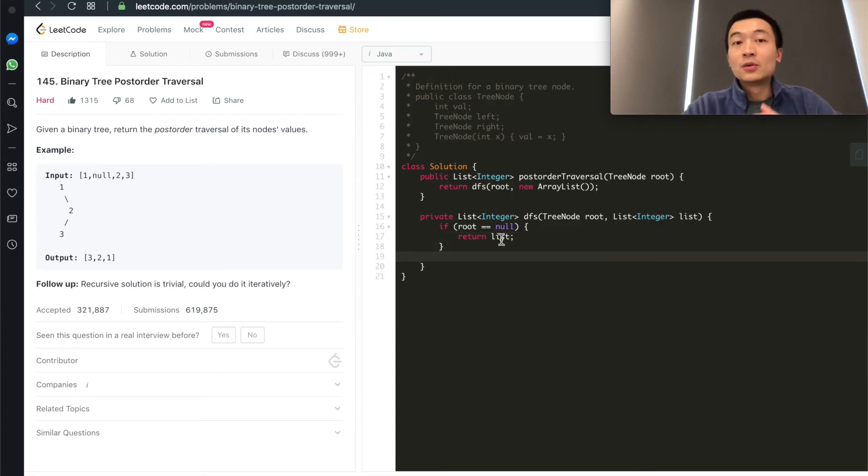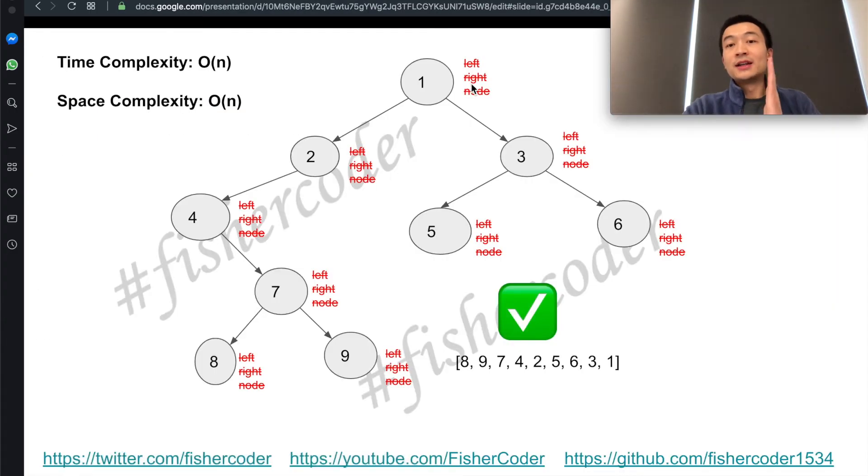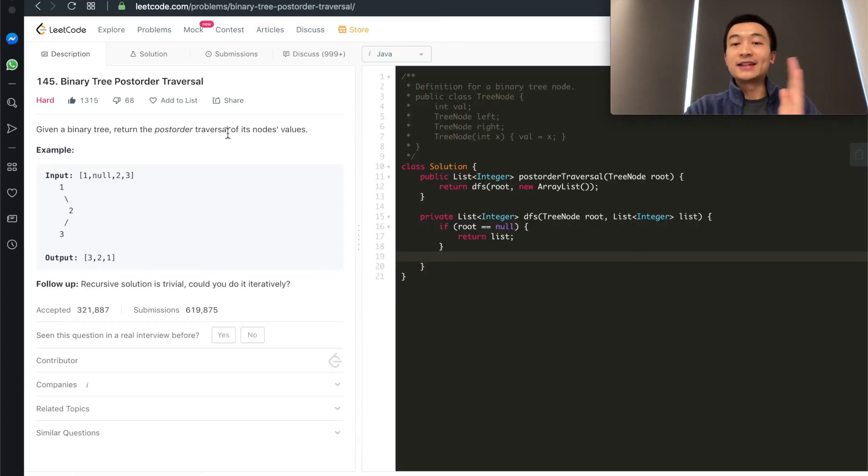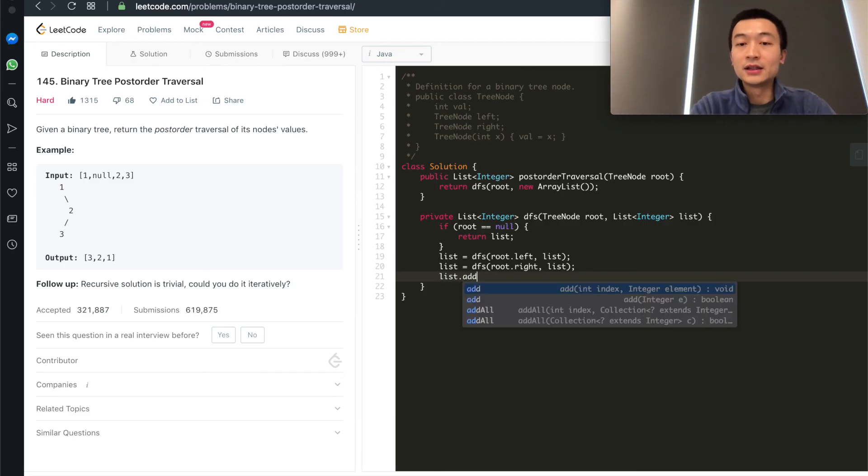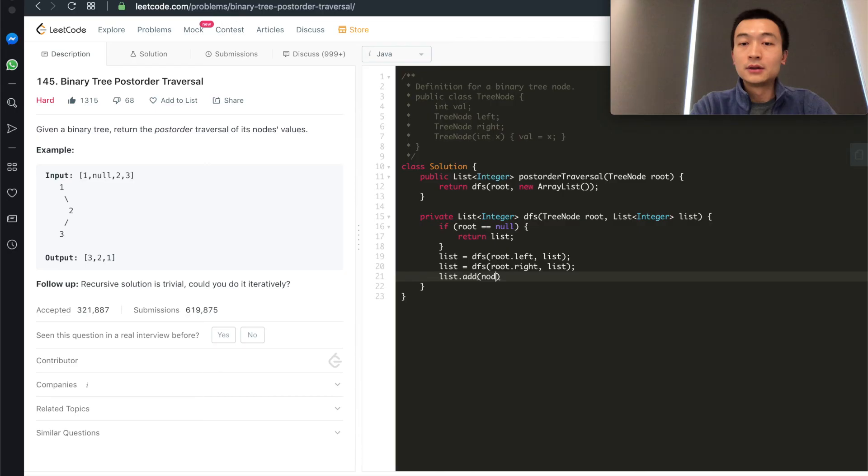And then what we'll do is we'll follow these steps, which is left-right-node. So we'll always visit left first. What we'll do is then we'll assign, we'll call this recursive function to go through its left side, and then we'll go through its right side, which is exactly the same, but change this one to be its right node. And in the very end, it's left-right-root node. Then we'll add node value, node into this list. And then finally, we'll just do return list. That's the entire program.